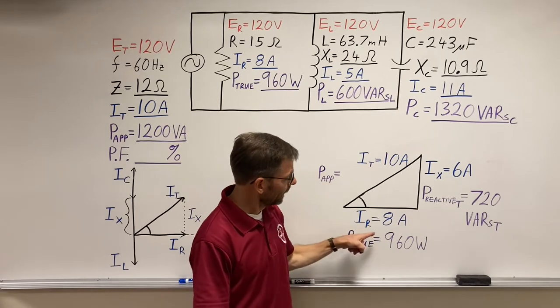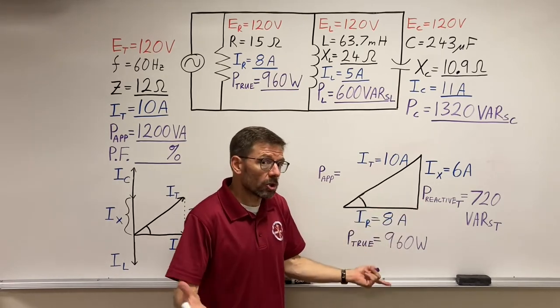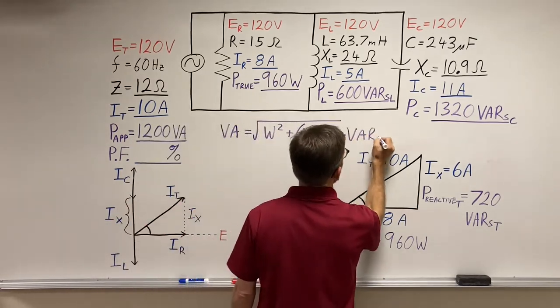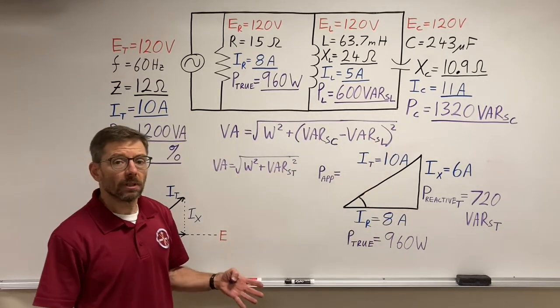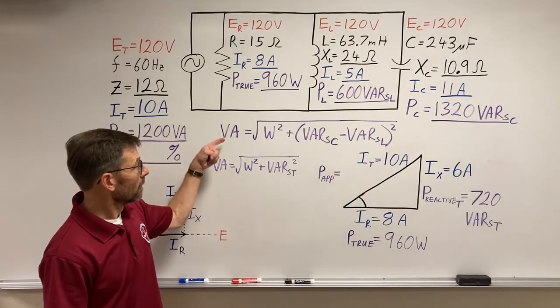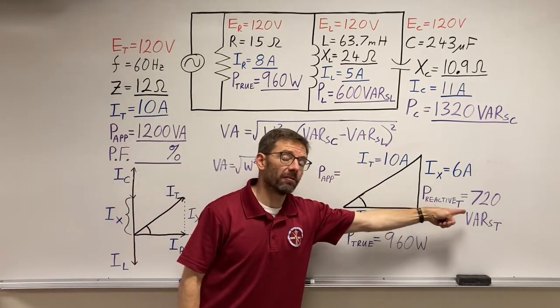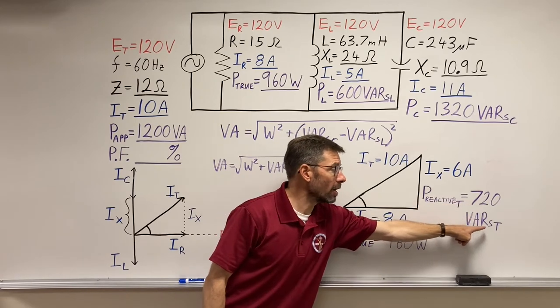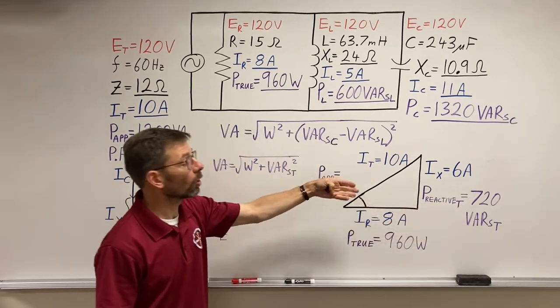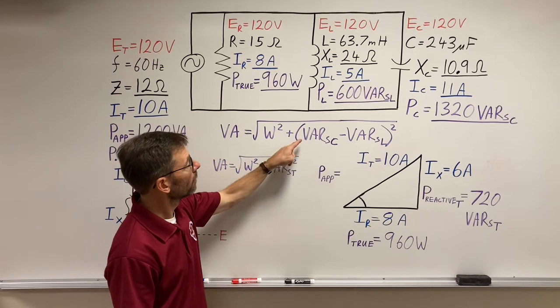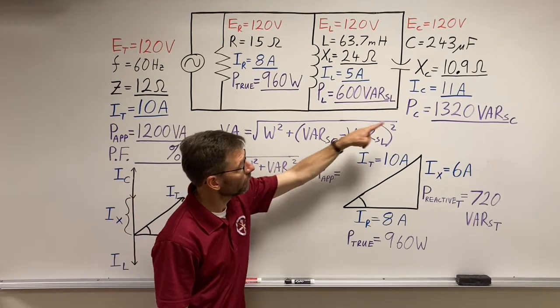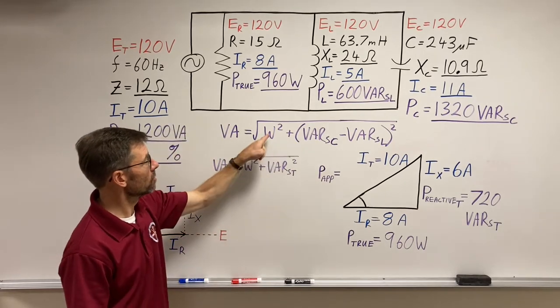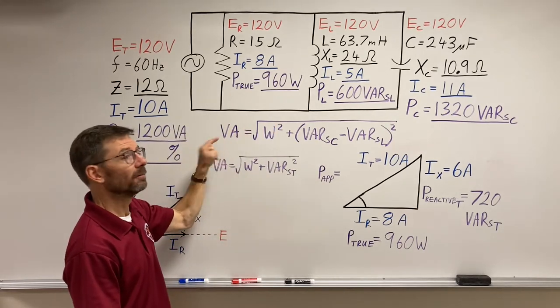And here's the formula. If I want to double check those, we're used to it - it's really Pythagoras. Really two formulas, but the same thing. This formula is before I did the math to find the 720 VARs total, total reactive power. Well, this did it for me. It was the big one, capacitive VARs minus the little one, inductive VARs, squared, squared, square root, VA.